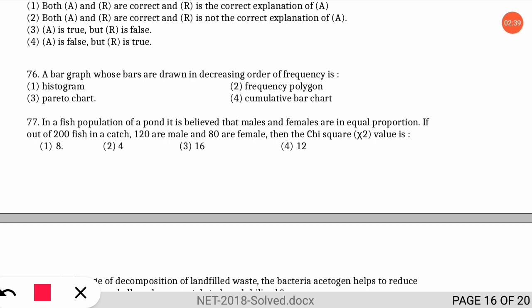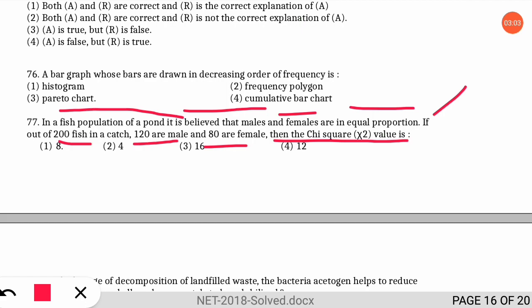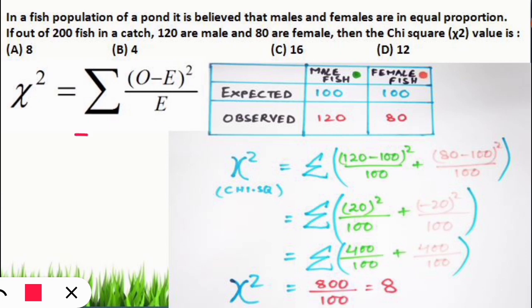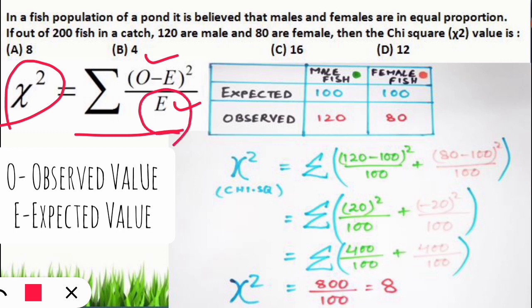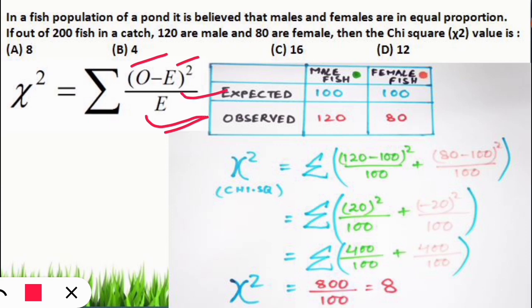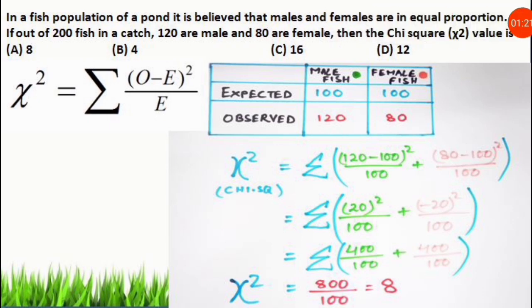The next question: in a fish population of a pond, it is believed that males and females are in equal proportion. If out of 200 fish caught, 120 are male and 80 are female, what is the chi-square value? To solve a chi-square test question, we must remember the formula: χ² = Σ (O − E)² / E, where O is the observed value and E is the expected value. Observed values are experimental values obtained after doing the experiment.